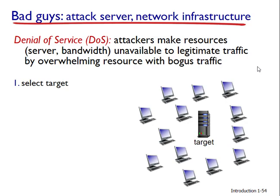Another form of denial of service attack is bandwidth flooding, where the attacker sends a deluge of packets to the targeted host — so many packets that the target's access links become clogged, preventing legitimate packets from reaching the server. There is also connection flooding, where the attacker establishes a large number of half-open or fully-open TCP connections to the targeted host, bogging it down with bogus connections so that it stops accepting legitimate connections.